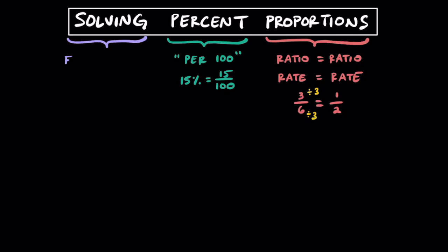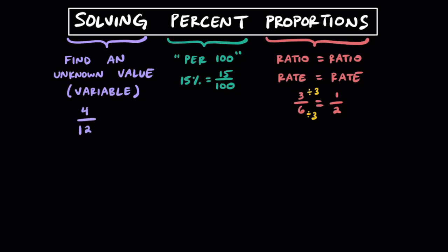When you see the word solving, we're typically looking to find an unknown value, and we're going to use a variable to represent that unknown. For example, if we have the ratio of 4 to 12 equal to something over 24, we can write the variable x. We can multiply the left ratio by 2 on top and bottom and find out that x equals 8. In order for the ratio of 4 to 12 to equal the ratio of x to 24, x must be 8 so that this does form a proportion.